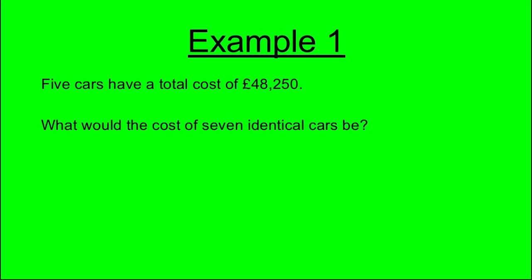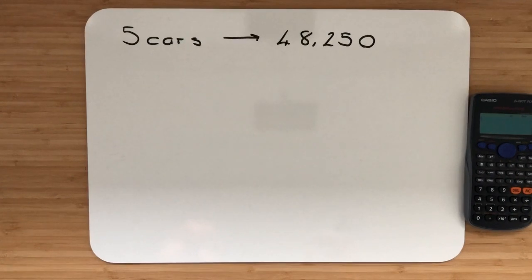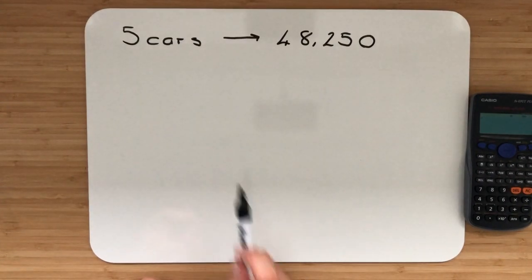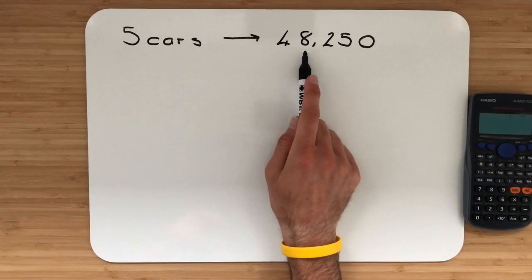Example 1. In our first example we want to find the cost of 7 cars. Now we've been given the fact that 5 cars have a total cost of £48,250.